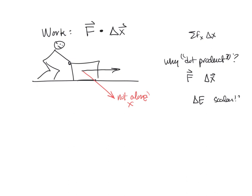Energy doesn't have a direction. So how do we take two vector things and combine them together and get something that has no direction? The dot product is a special operator that lets us multiply vectors and get out a scalar.